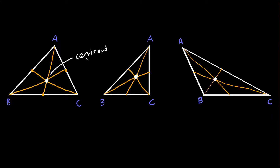The centroid is located two-thirds along the distance of the median. You always start at the vertex and move towards the midpoint, and the centroid is always two-thirds of that distance. For example, if the whole distance from A to D is three feet, then the centroid would be at two feet. It's really important that you start at the vertex and move towards the midpoint — don't go the other way around.